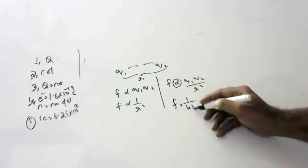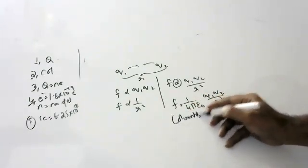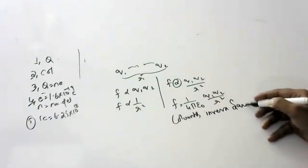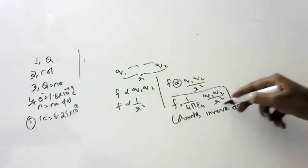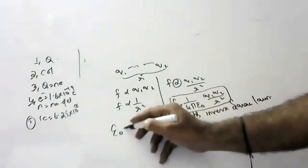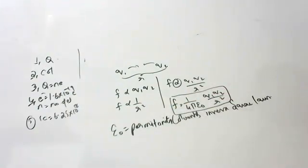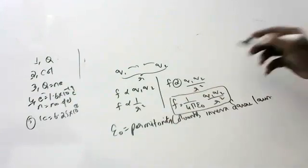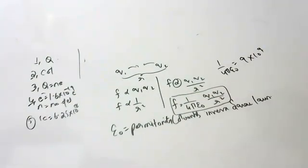Removing the proportionality and introducing a constant, the force equals 1 over 4 pi epsilon-zero, times Q1 Q2 divided by R squared. This is famously called Coulomb's inverse square law, similar to Newton's law of gravitation. Here, epsilon-zero is called the permittivity of the medium, and the value of 1 over 4 pi epsilon-zero is 9 into 10 to the power of 9. This topic is not in your syllabus — I am just discussing it for background knowledge.